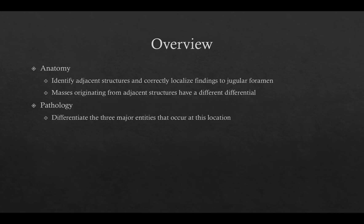First we'll review the anatomy of the jugular foramen and its relationship to the adjacent sites — the keys that identify the epicenter of any mass in this region. If the center of the mass is not the jugular foramen, ask yourself if you're dealing with something from an adjacent site. There are three classic entities that can occur at this site; other entities will not be discussed, but metastatic disease and lymphoma can always be a consideration.